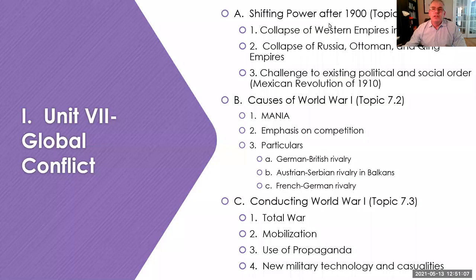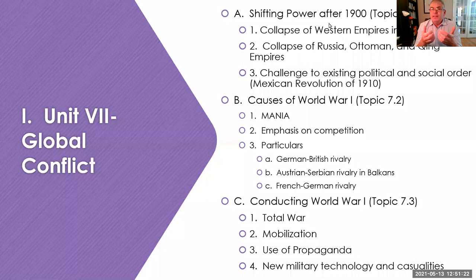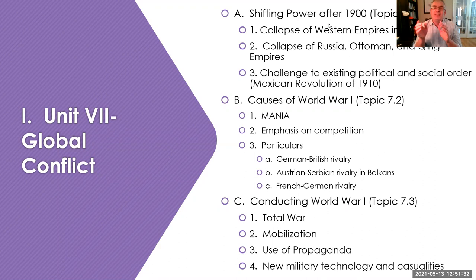The first thing to understand is that there is a shifting power after 1900. The 20th century sees the shift in political powers. We're going to see some traditional established empires from the 19th century get undermined and begin to erode. We have the collapse of the Russian, the Ottoman, and the Qing empires.